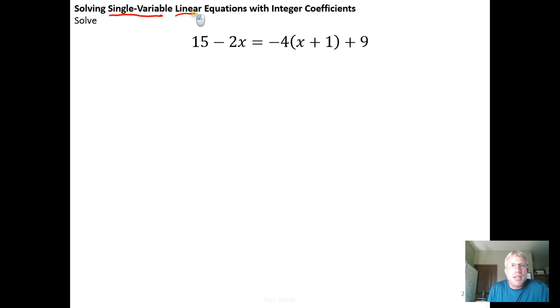The linear piece comes from the fact that the variable that we have is only raised to the first power. If any of the exponents on the x were anything other than a 1, say this was squared or this were to the 1 half power, it would no longer be a linear equation. That's what makes it linear.